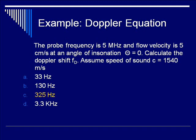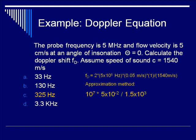The correct answer is C: 325 Hz. Here's how: F_D = 2 × (5 MHz) × (5 cm/s) × cosine(0) / C. Cosine of 0 is 1. Using the approximation method, the answer is approximately 300 Hz, which makes choice C the closest at 325 Hz.